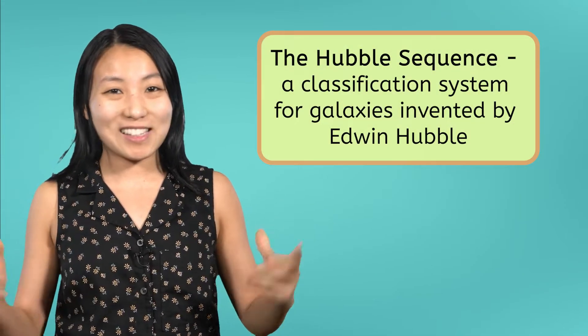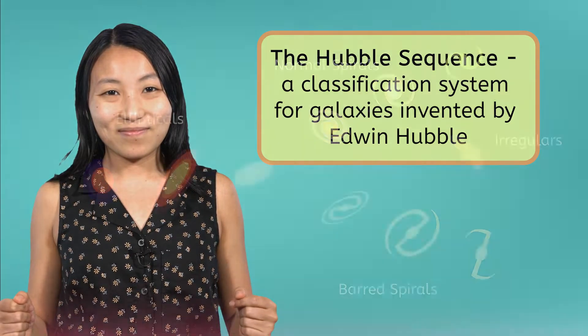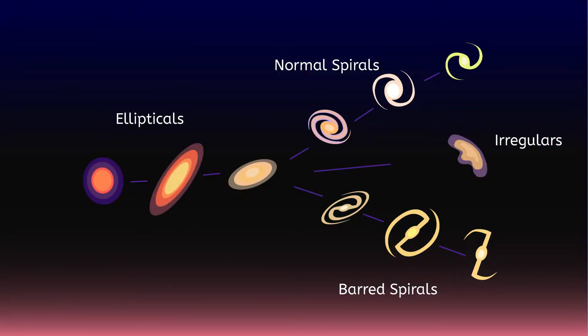That's where one of the founding fathers of modern astronomy comes in: Edwin Hubble. In 1924, Hubble discovered that there were other galaxies besides our own. Within just a few years, astronomers had discovered so many galaxies that they needed a way to sort them all. That's when Hubble proposed the classification system that astronomers still use today, called the Hubble Sequence.